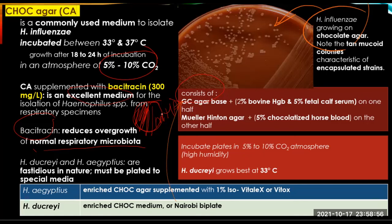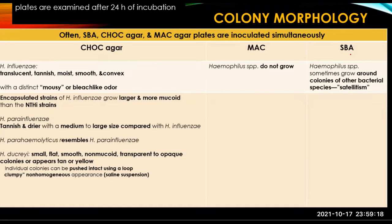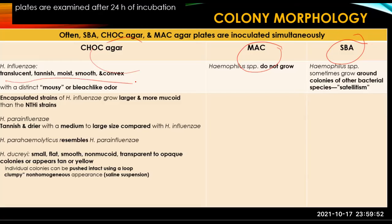On chocolate agar, the colonies of H. influenzae have tan mucoid colonies — characteristic of the encapsulated strain. Most clinical specimens are plated onto a variety of culture media including SBA, chocolate agar, and MAC, and examined after 24 hours of incubation. Colonies of H. influenzae on chocolate agar appear translucent, tannish, moist, smooth, and convex with a distinct mousy or bleach-like odor — a common board exam question.